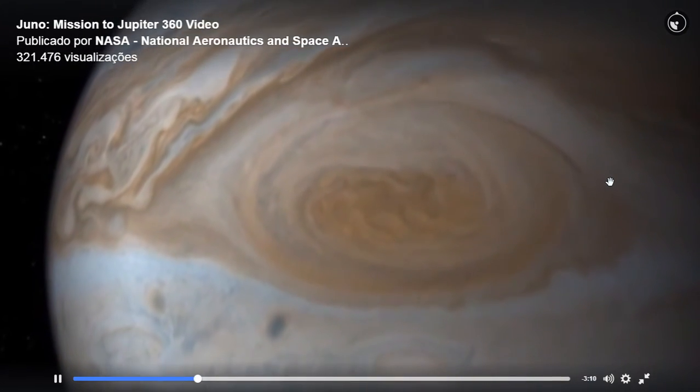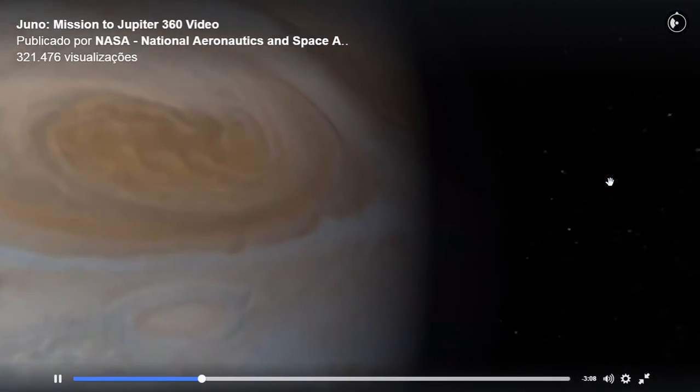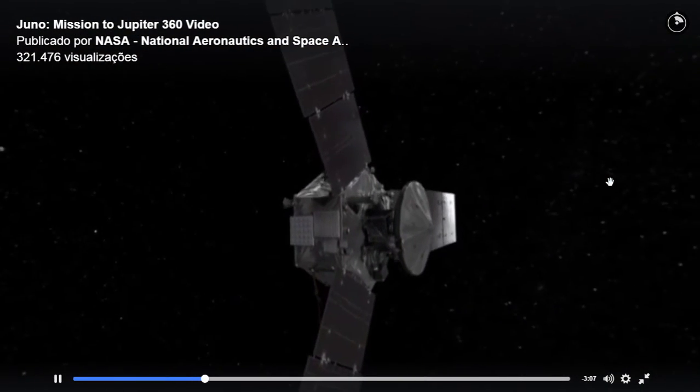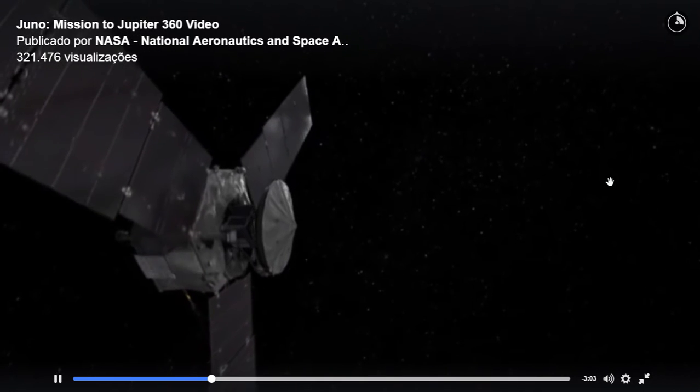Speaking of storms, don't miss the great red spot, a swirling, crimson-colored vortex twice as wide as Earth.